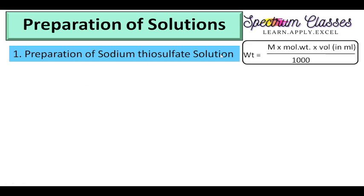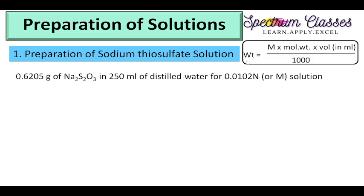Preparation of sodium thiosulfate solution. For this purpose, to prepare the solution I am going to use this equation. In this equation we need to prepare our solution by putting in the values. We have sodium thiosulfate and I want to prepare it in 250 ml of distilled water. I want to prepare a 0.01 molar solution of sodium thiosulfate. In my previous video I told you about normality and molarity. Here normality is equal to molarity of sodium thiosulfate. To prepare the 0.01 M (M/100) solution, I am going to put the values into this formula.